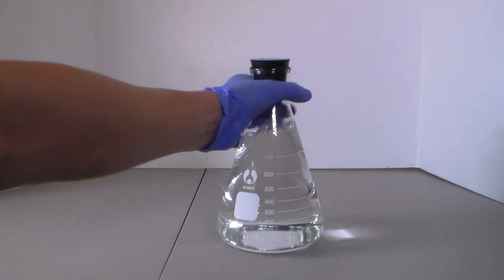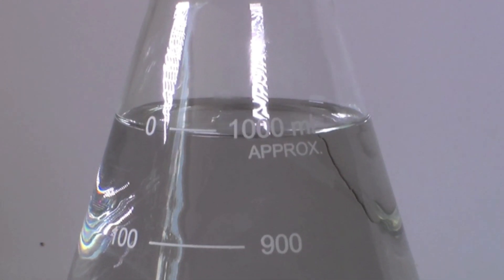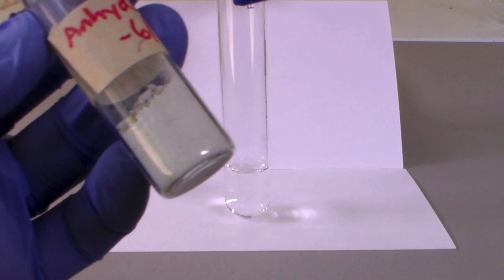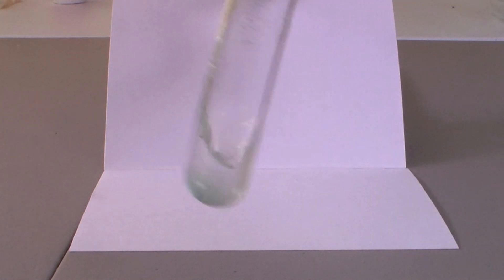I tested the ethanol for water by adding a few milliliters to a test tube and then adding some anhydrous copper sulfate. You can see by the faint blue color that the ethanol still has some water in it.